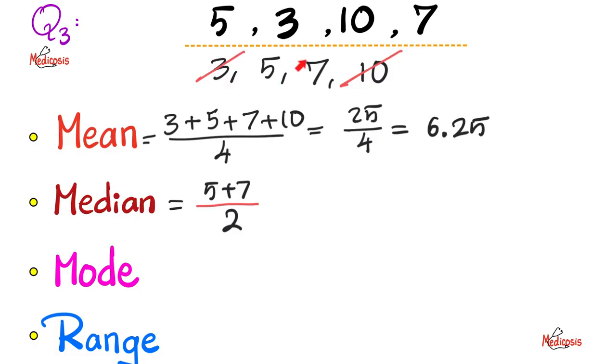But if you have an even set of numbers, such as 4 numbers as you see here, you take the 2 in the middle and add them together, divide them by 2. So, their sum divided by their number. 5 plus 7 is 12. Divide by 2 is 6. So, the median is 6.